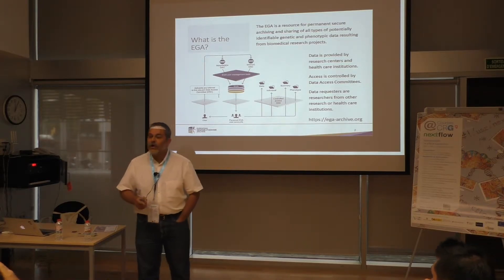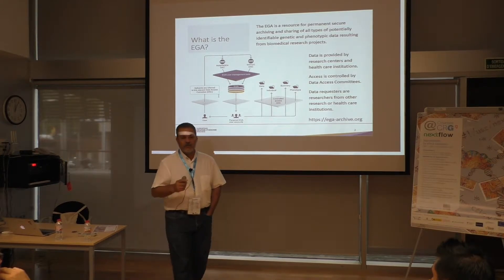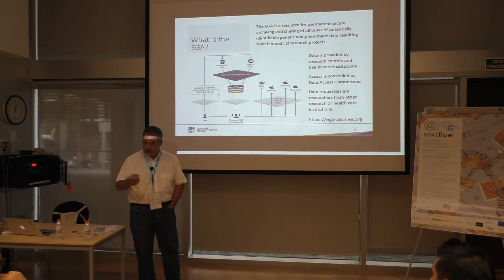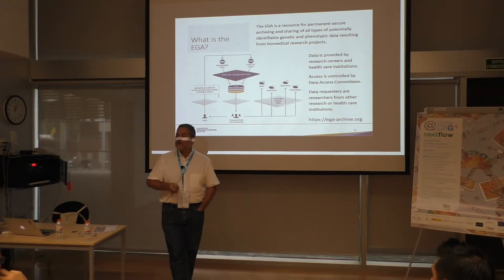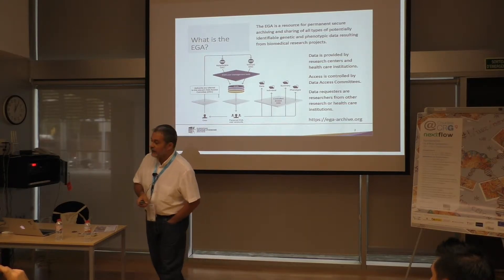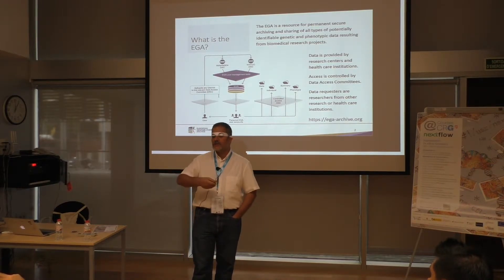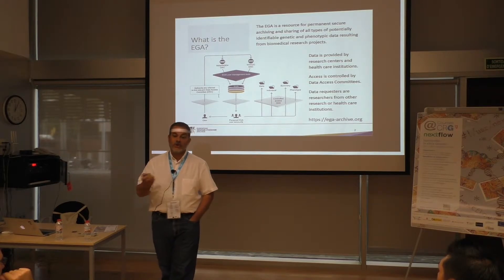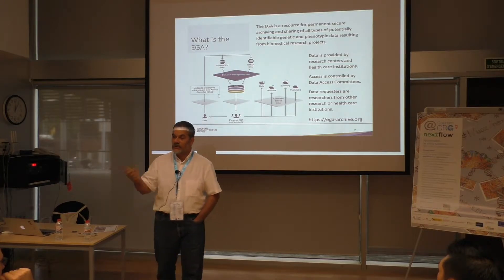What is the EGA? The EGA is an archive of human genomes that should be under controlled access, meaning that it's data that is not public in the sense that you cannot make use of it freely. You need to request permissions in order to access the data and use it in your research. The access to the data is usually controlled by the data access committee that supervises if the applicant has a project aligned with the consent agreement that the donors of the data have signed.